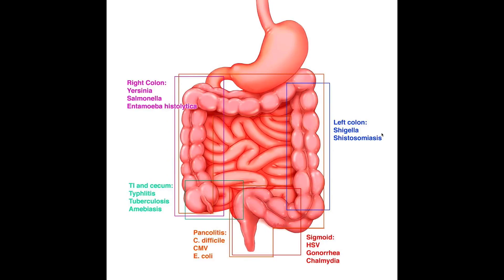In the left colon, Shigella and Schistosomiasis are two common organisms that come to mind. In terms of the sigmoid, we have HSV, which is herpes simplex virus, we have gonorrhea, and we have chlamydia.